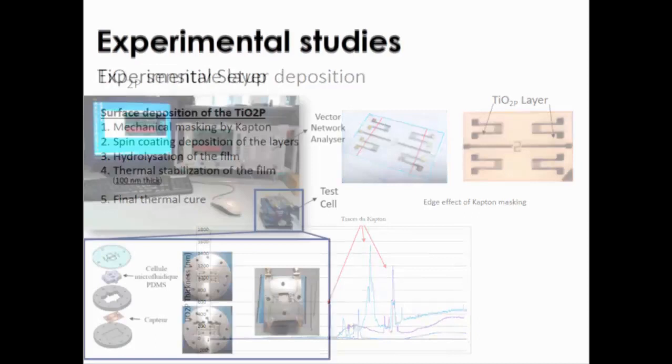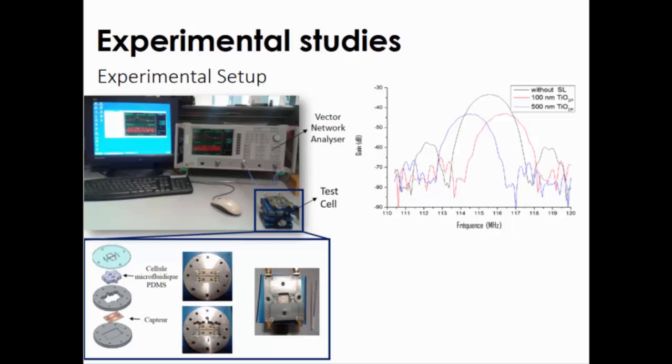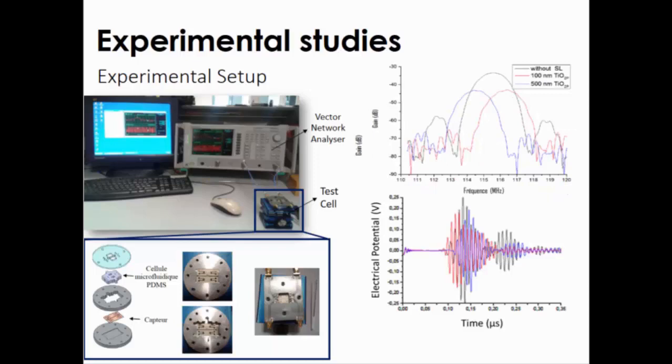The first tests are done with a very simple measurement cell by drop casting. The results are analyzed with a vector network analyzer. The first response shows here with the device without liquids, but only with the porous layers, that we have the same behavior: the frequency shift due to the deposition of 100 nanometers of titanium dioxide is higher than the bare device, compared to what we obtain by simulations.